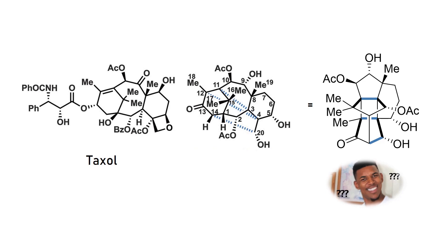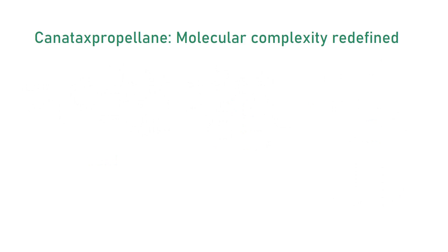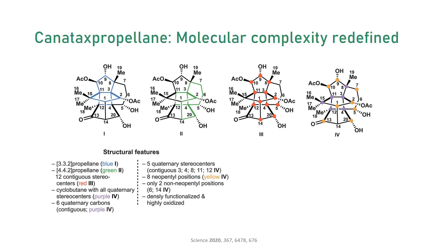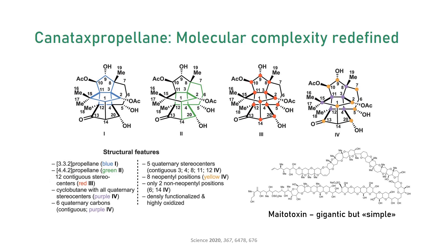Although it looks funny, Canataxpropellane is no joke. This molecule really checks all the boxes characterizing structural complexity. There are two so-called propellane motifs, a literal dozen contiguous tertiary and quaternary stereocenters, only two non-neopentyl positions in the entire carbon framework, and some nice hydroxyl groups and a ketone to round things off. This has to be one of, if not the most complex natural product that has ever been isolated, excluding gigantic stuff like maitotoxin, because size alone doesn't always matter.